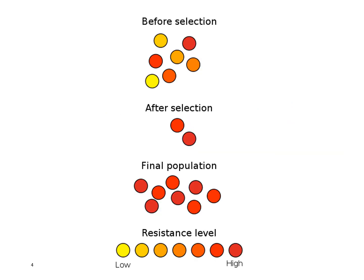Here's an example of this. We have a population of bacteria with some variation, and some — the darker red ones — have randomly acquired a resistance gene. We give the patient an antibiotic: the resistant bacteria survive, the rest die off. The resistant ones then reproduce and all their offspring are resistant to that antibiotic as well.